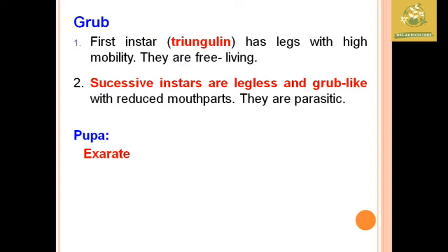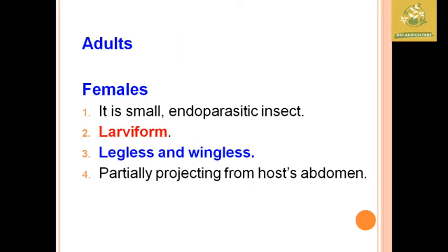Regarding the developmental stages: the first-instar grub has legs and is highly mobile — it is a free-living stage. Successive instars are legless grubs with reduced mouthparts and are parasitic, attacking Hemiptera insects as parasites within the host body. The pupa is an exarate pupa. The female is a small endoparasitic insect — legless and wingless — and partially projects from the host abdomen after maturation.